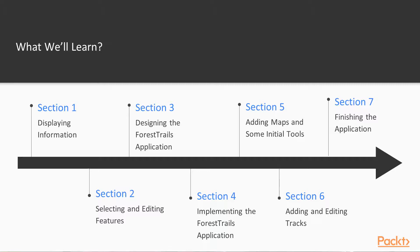In Section 6, Adding and Editing Tracks, we'll continue our implementation of the Forest Trails system by implementing the logic required to add, edit, and delete tracks. And finally, in Section 7, Finishing the application, we'll complete our implementation by writing the logic needed to calculate the shortest path between two points, and finish by testing our program and exploring how you might want to take it further.